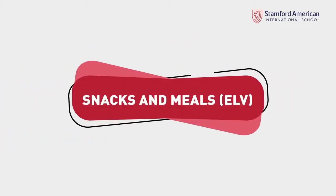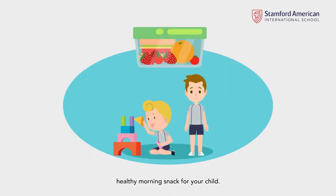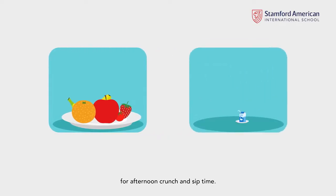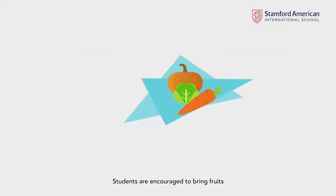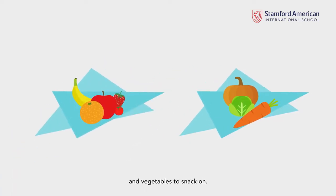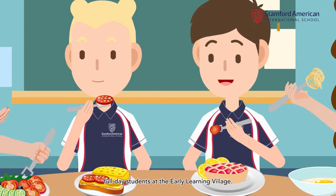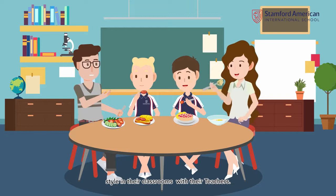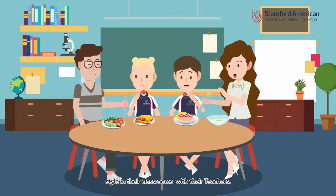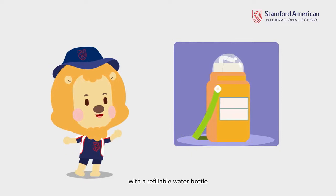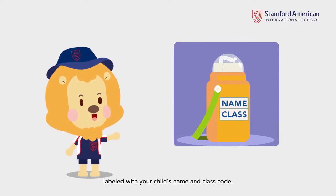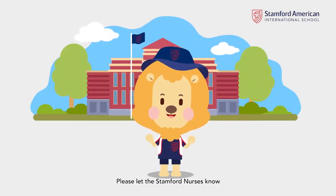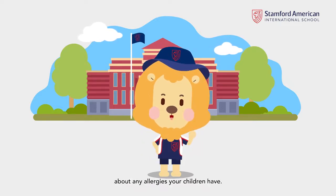Snacks and Meals — ELV. Please provide a small, healthy morning snack for your child. For Kindergarten 2 children, you can send in a second snack for afternoon crunch and sip time. Students are encouraged to bring fruits and vegetables to snack on. A hot lunch is included for all full-day students at the Early Learning Village. Students enjoy eating their food family-style in their classrooms with their teachers. Please provide your child with a refillable water bottle labeled with your child's name and class code. Kindly note that per Stamford's Allergy Management Policy, please let the Stamford nurses know about any allergies your children have.